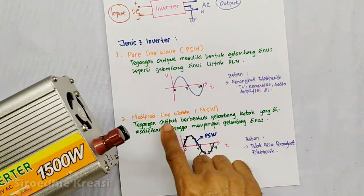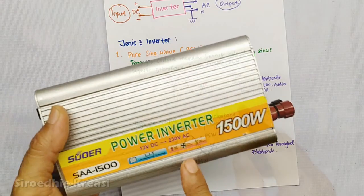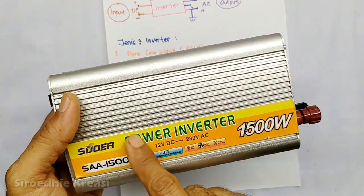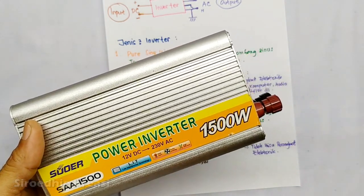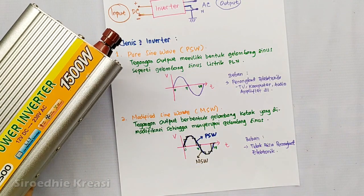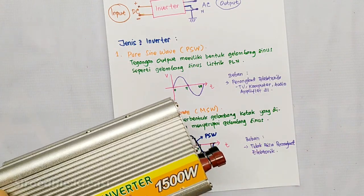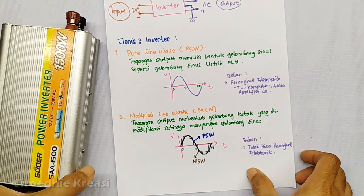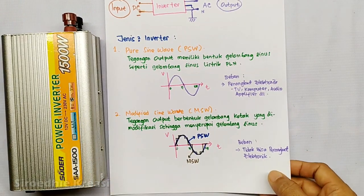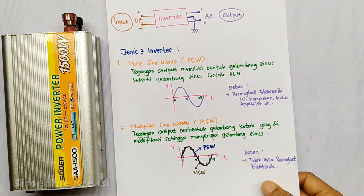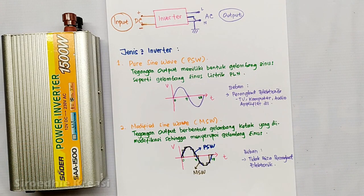Inverter yang ada sama saya ini adalah inverter jenis kedua atau MSW, modified sine wave, tidak bisa dipakai untuk jenis beban elektronik. Jadi biasanya yang jenis full sine wave atau model pertama, kalau kawan-kawan mau beli, biasanya di labelnya ada ditulis bentuk sinyal atau gelombang sinusoidal.